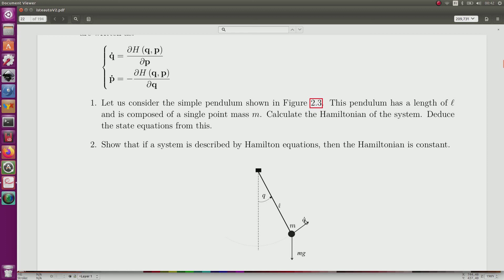q dot corresponds to the derivative of q and is directly related to the momentum. From this, we will calculate the Hamiltonian of the system and deduce the state equation from this Hamiltonian.